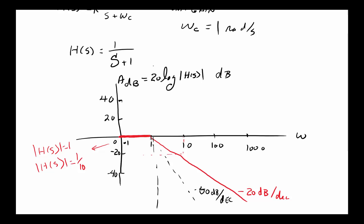go about making this sharper? The way we do that is by adding more poles, because every time you add a root to the denominator you're basically adding 20 dB drop in it.